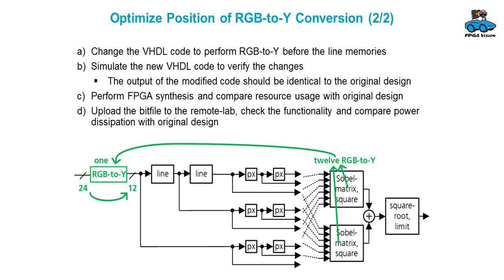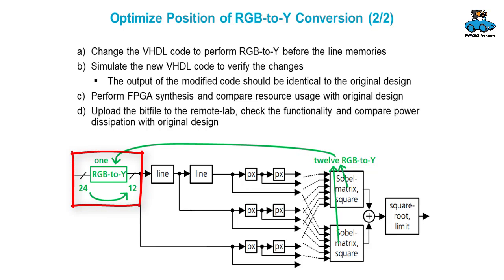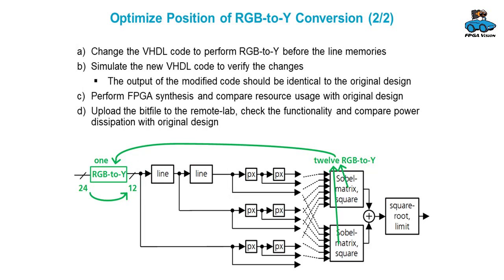Here is the diagram. In the Sobel matrix, you have 12 conversions from red-green-blue to luminance. You can position this conversion to the beginning of the processing so that you only have one conversion and the line memories also have lower word width.